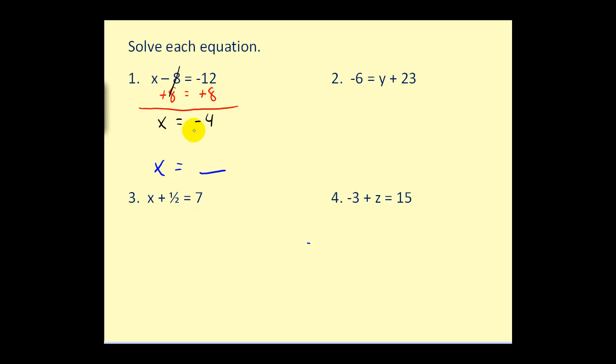So we have x isolated on the left. Then on the right negative 12 plus 8 equals negative 4. Therefore our solution is x equals negative 4. And if we wanted to check this we could replace x with negative 4. Negative 4 minus 8 is equal to negative 12 and it checks.